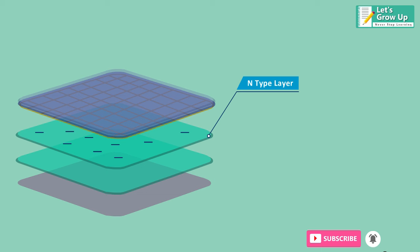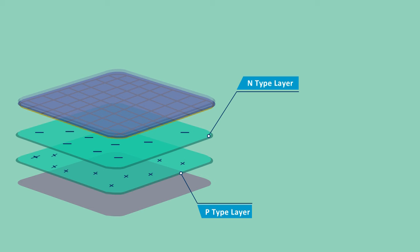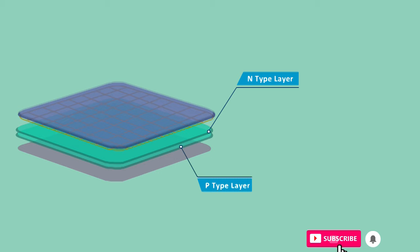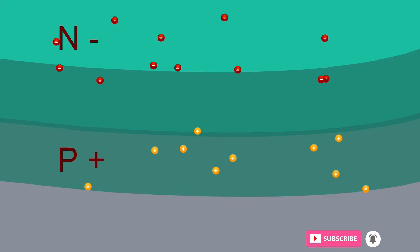The bottom layer called the p-type layer contains high concentration of holes. When the p-type and n-type semiconductor is joined it forms a p-n junction. On forming a p-n junction, the electrons of the n-type material try to reach the p-region creating a negatively charged layer.